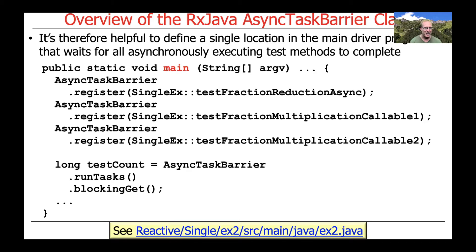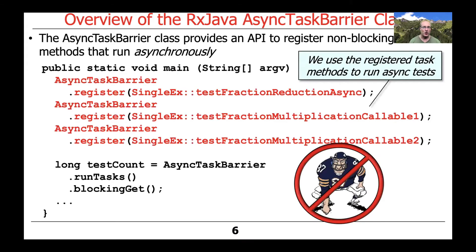We show the main program that might exist for some of the case studies — they all look very similar. We're using the RxJava version of async task barrier to register non-blocking method references that will be run asynchronously. We register methods that use the RxJava Single class, like test fraction reduction async, test fraction multiplication callable one, multiplication callable two, and so on. All of these methods run asynchronously — they return before computations are finished, returning Singles.